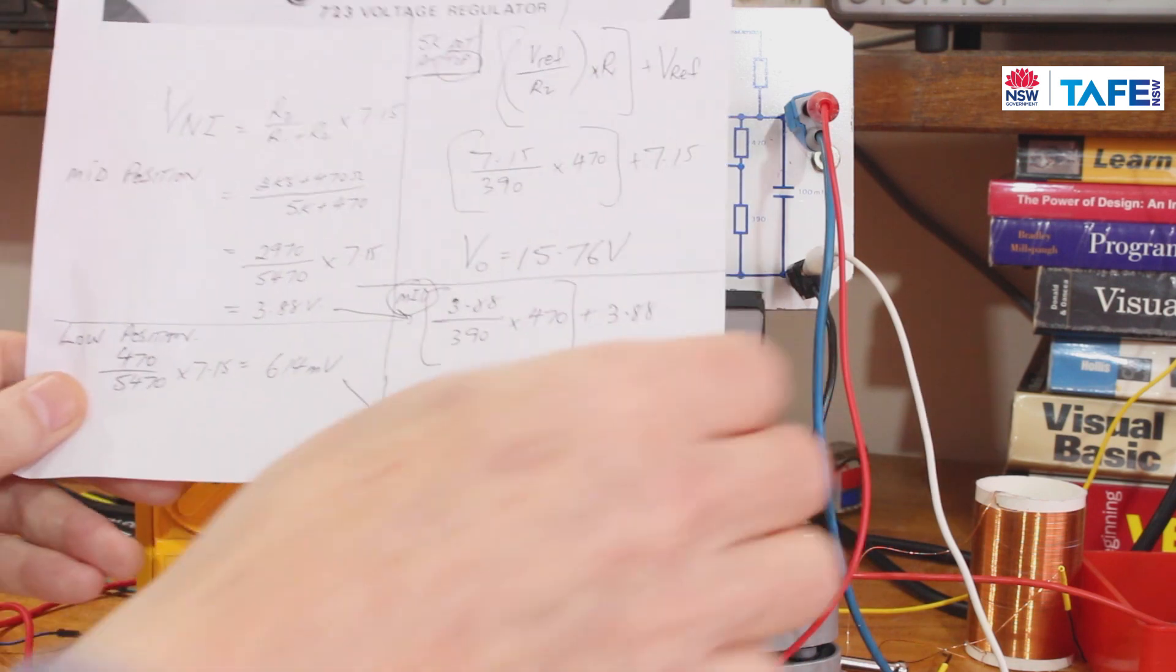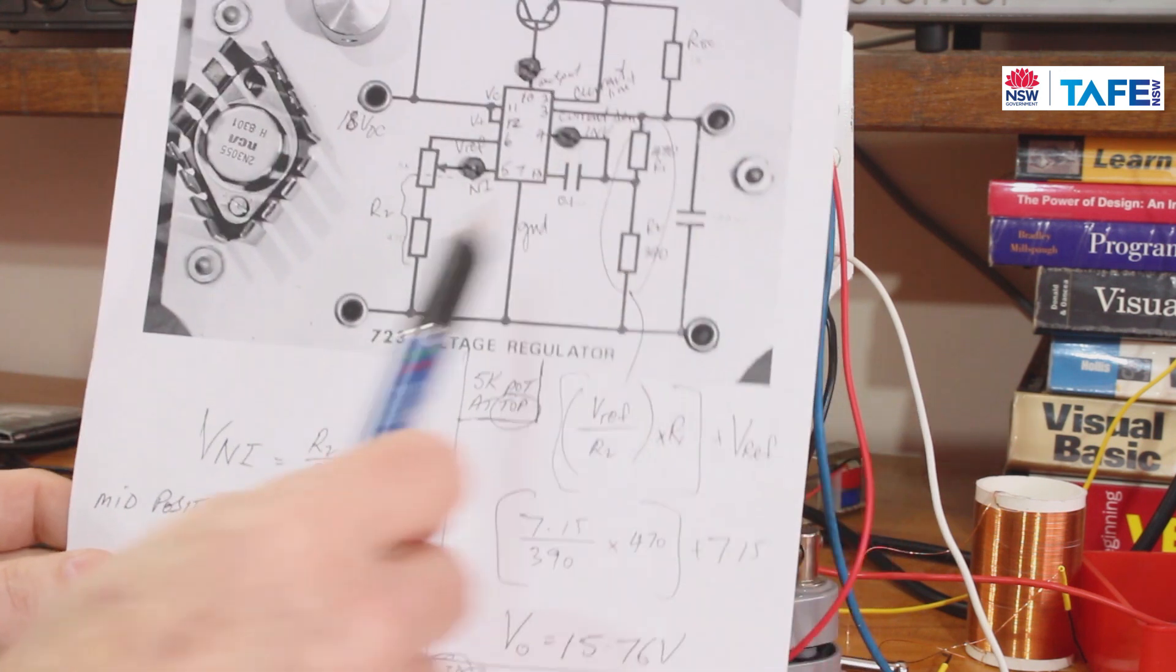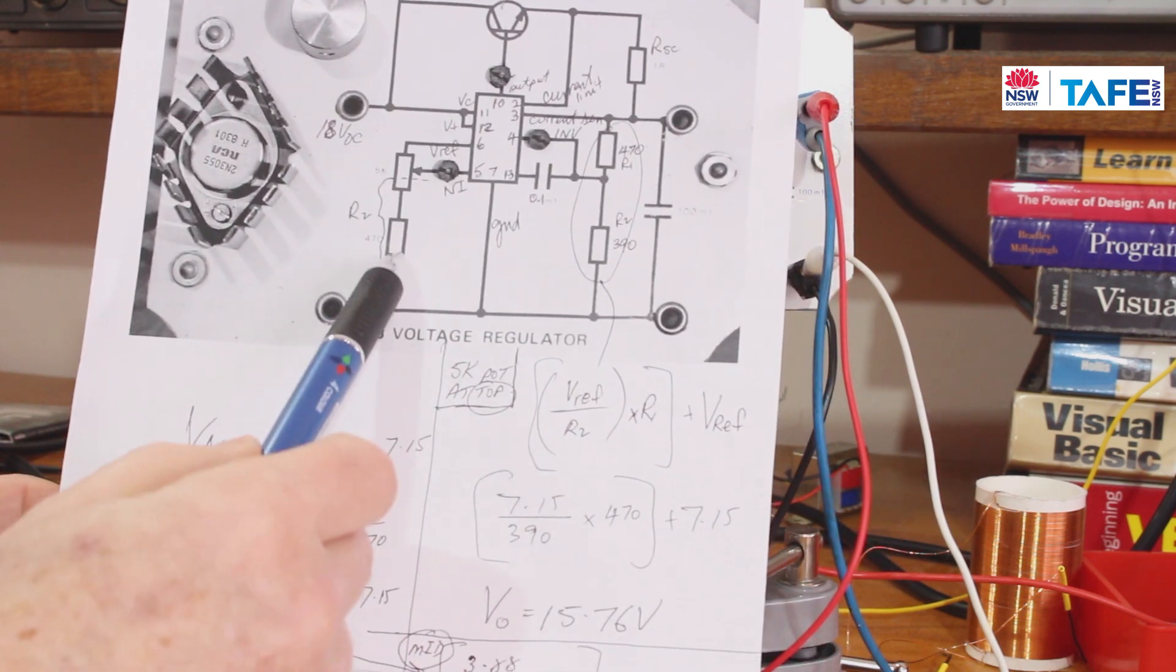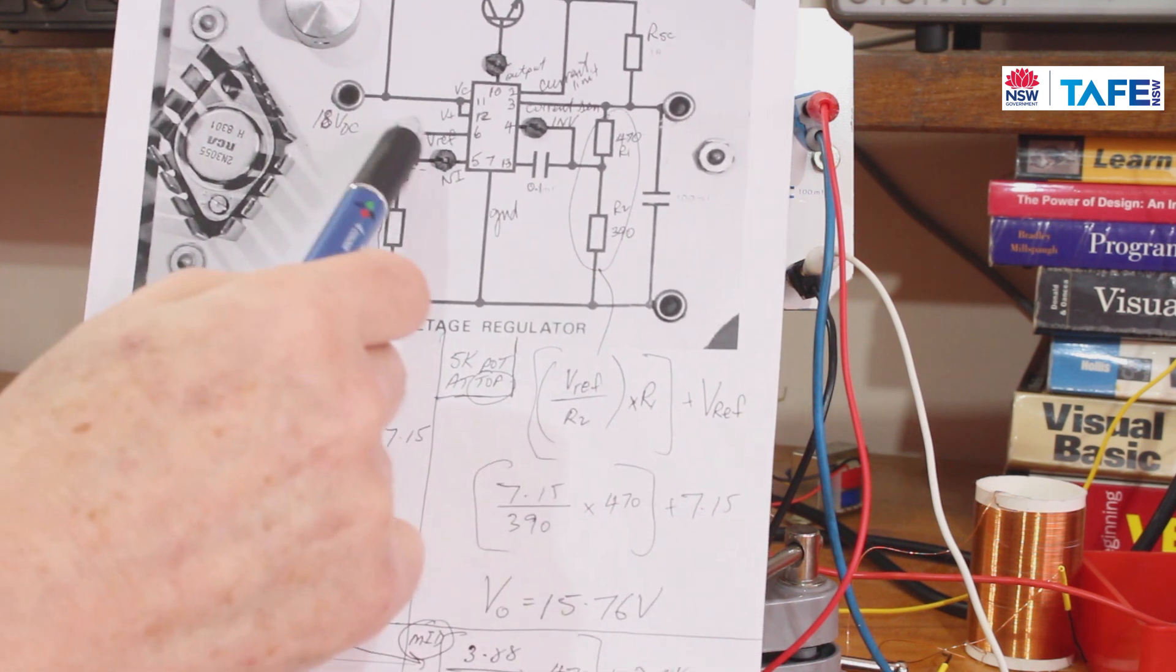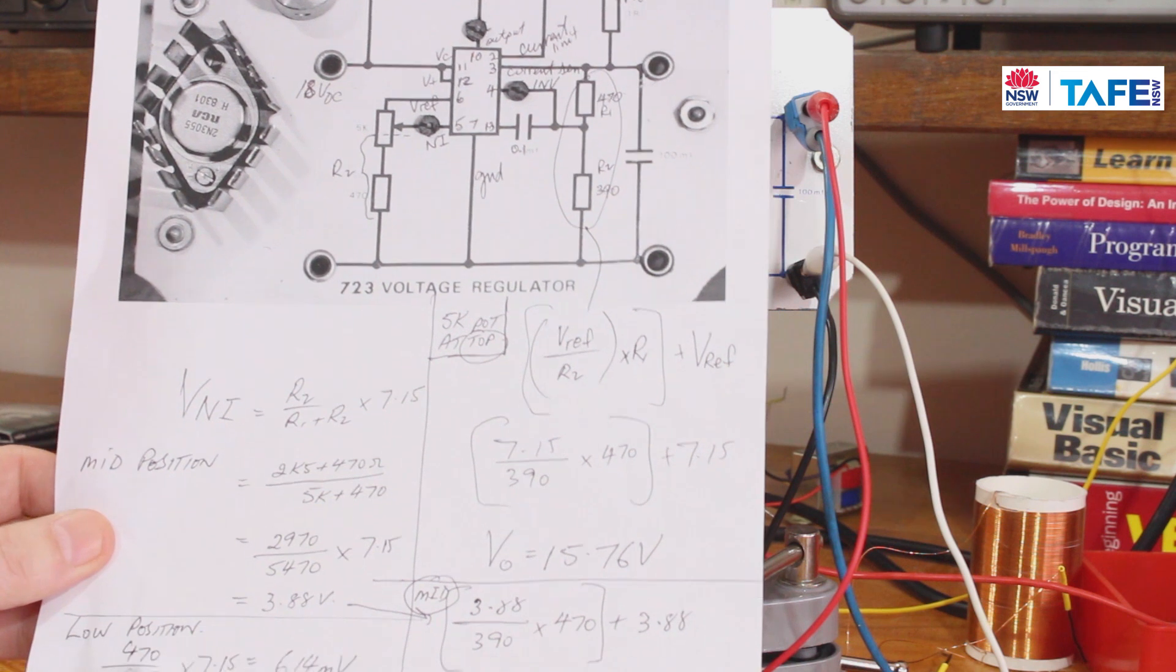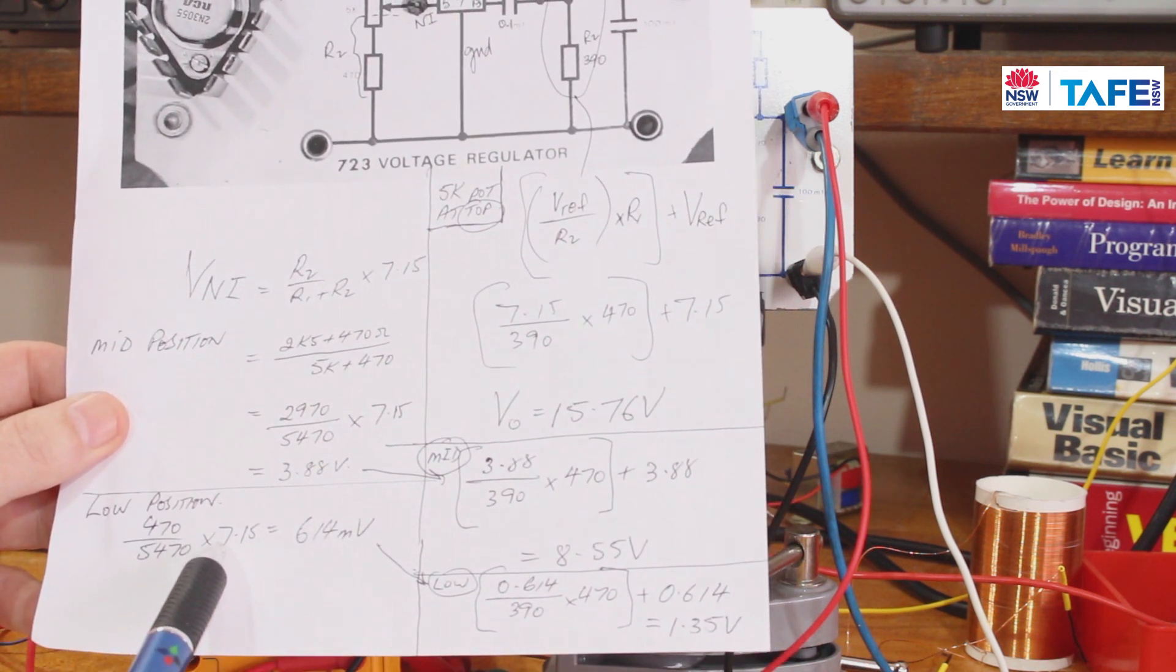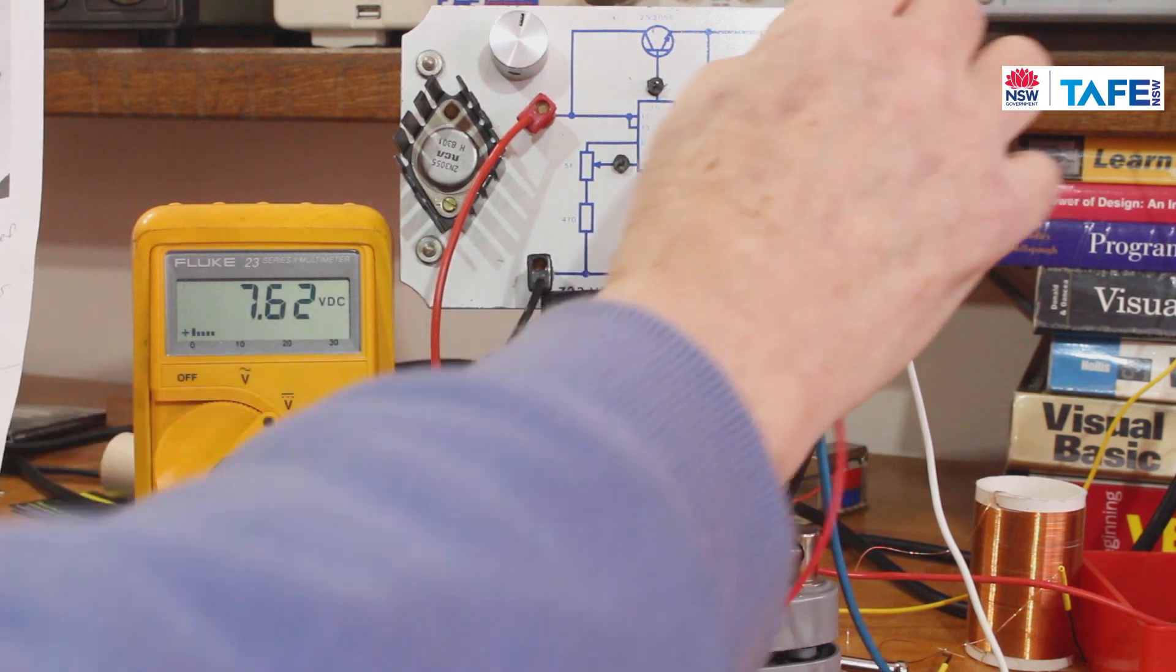Let's go and have a look at the low position. The low position, we should have, because the wiper will be right down the bottom of the 5k pot, so that gives us 470 divided by the two resistors added together. So 470 divided by 5470 times the 7.15: 614 millivolts. Let's see if we've got our 614 millivolts.